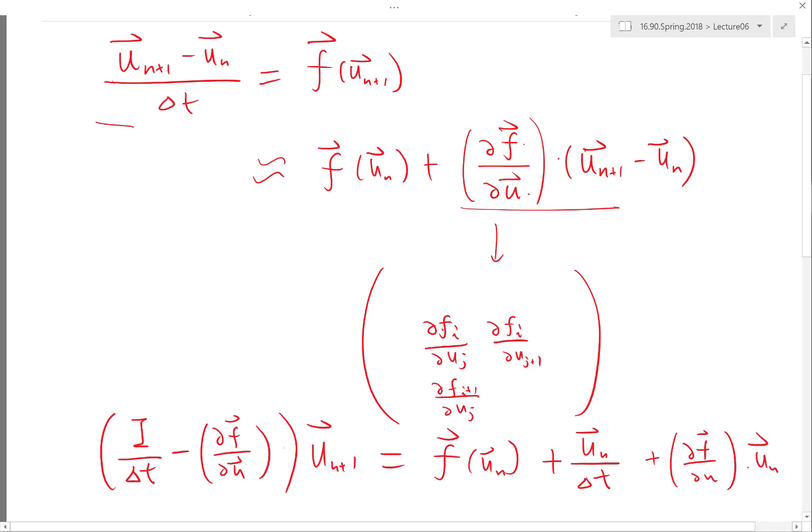So you have to solve a matrix system to compute the next guess. Of course, this is just my first guess, and I want to continue iterating. So basically, you can't use implicit schemes in solving non-linear equations. It's just a lot more involved. And you have to compute this guy.